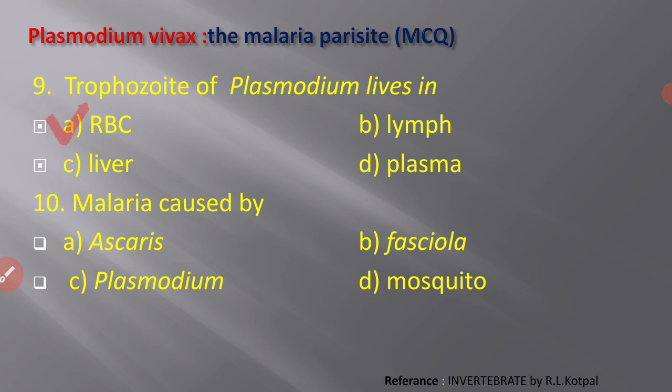Next MCQ: malaria is caused by — A) Ascaris, B) Fasciola, C) Plasmodium, D) mosquito. Malaria is caused by Plasmodium. Plasmodium is the causative agent of malaria.